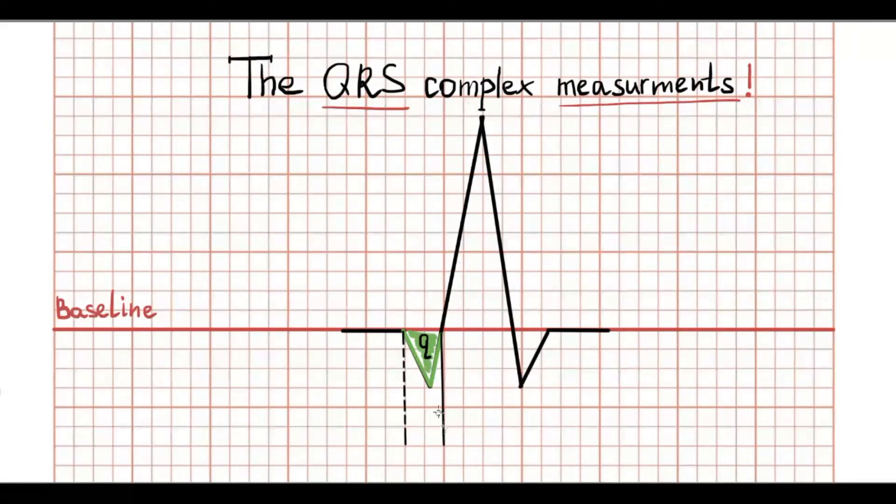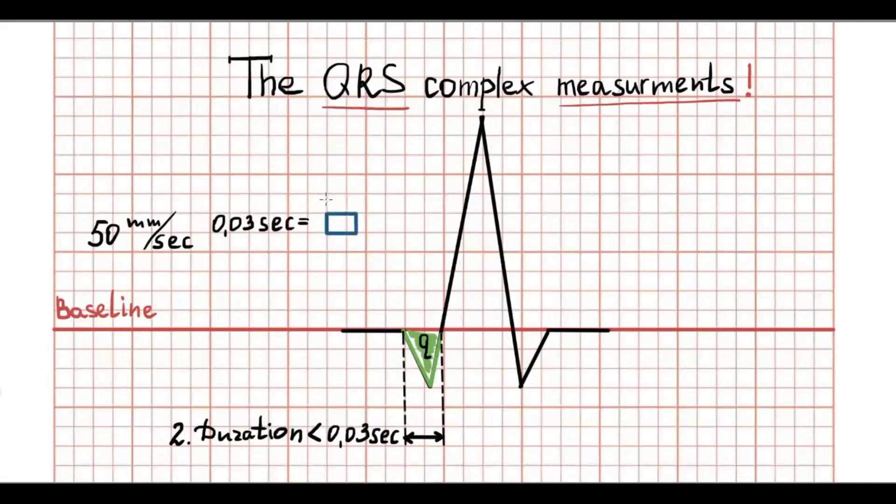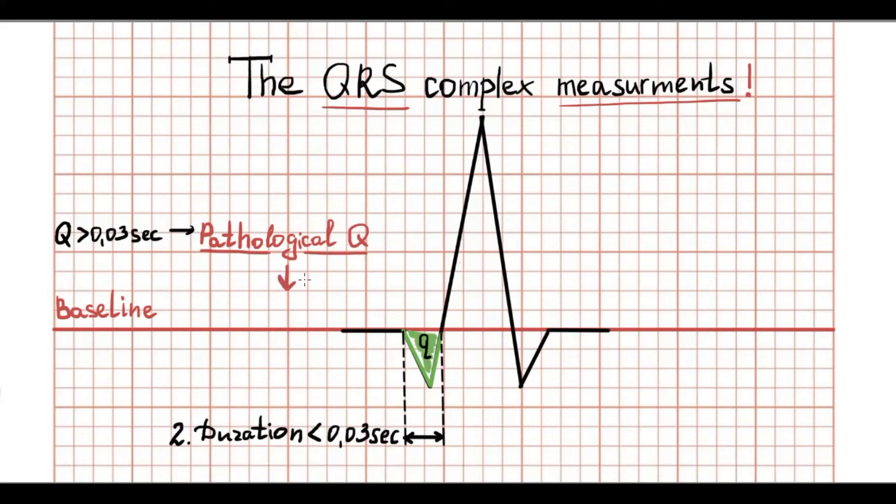Let's move to duration. The duration of Q wave should be less than 0.03 second. If the paper speed is 50 mm per second, 0.03 second is 1.5 small box. In other words, the Q wave should be less than 1.5 small box. If the duration of Q wave is more than 0.03 second, this Q wave is called pathological. The pathological Q wave is a very important sign of myocardial infarction.